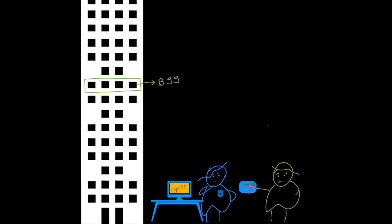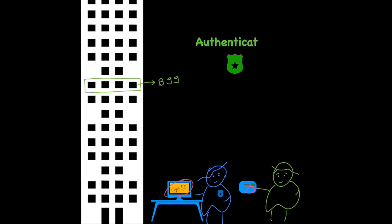They check the signature on your card against the signature in their system and find that the signatures match. Now they trust that the information on your card is valid, so they let you enter the building. This is authentication — your signed ID card serves as a way to authenticate your identity.